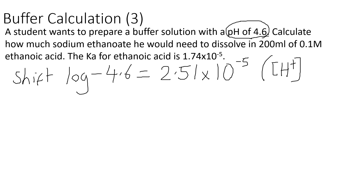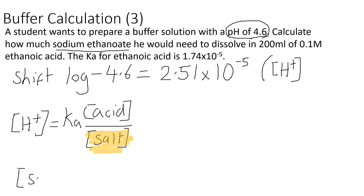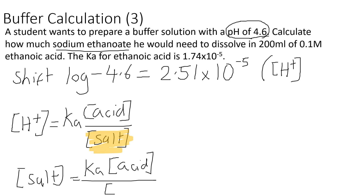Now write out the buffer equation: [H⁺] = Ka × [acid]/[salt]. We need to rearrange this because we are trying to calculate how much sodium ethanoate — our salt — needs to be added. We need to make the concentration of the salt the subject: [salt] = Ka × [acid] / [H⁺].